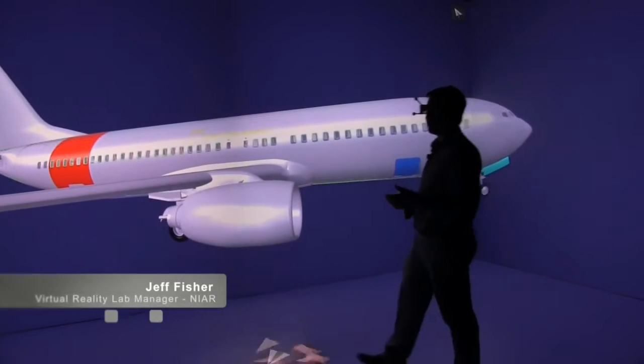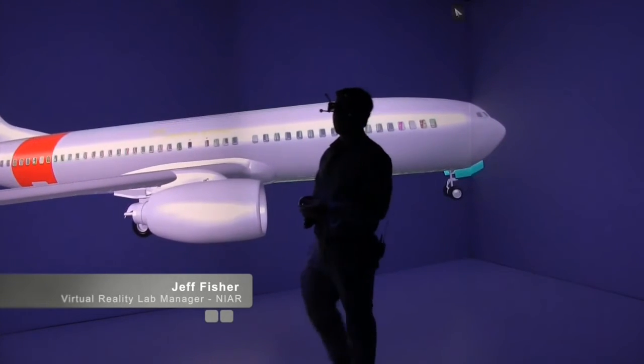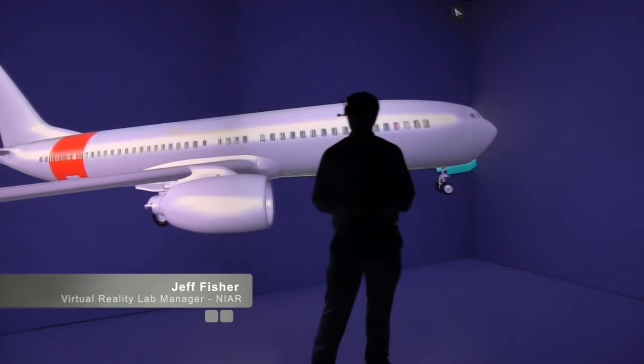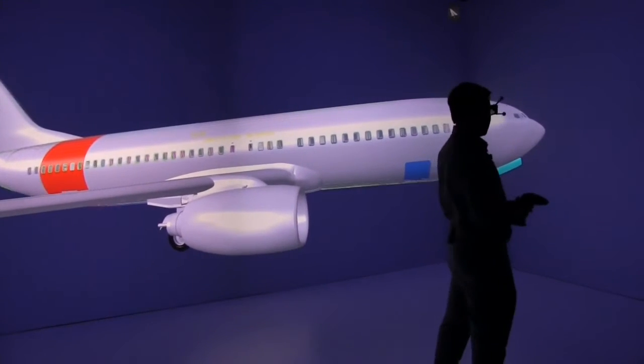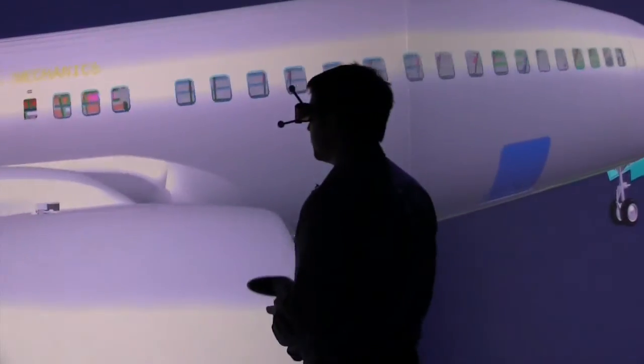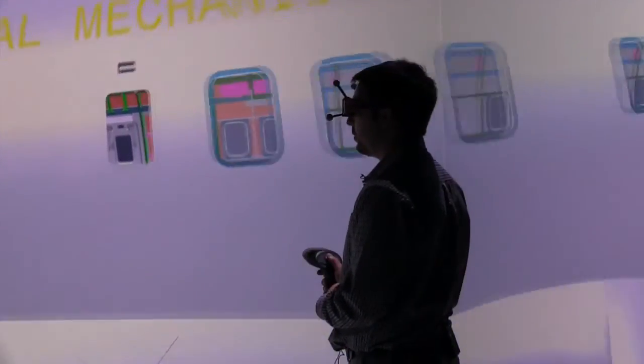Welcome. This is WSU's virtual reality center. This is our large-scale visualization system, or a flex cave as it's technically called. It's referred to as a cave because it's got four side walls.